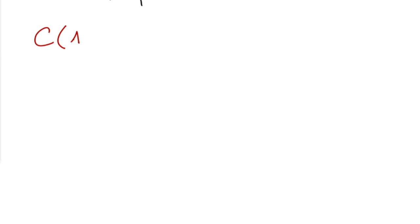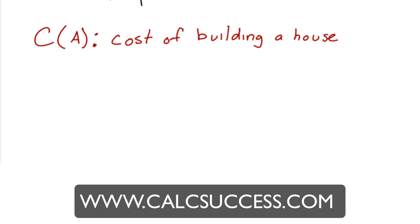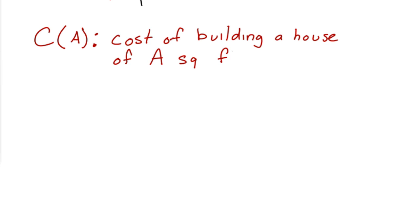Let's say we have a function c of a, where c(a) represents the cost of building a house of a square feet. I'm not going to give a specific function — all this means is that you plug in a number for the square footage and this function will tell you how much it'll cost to build that house. Let's interpret the following.